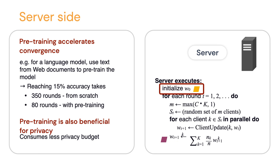With pre-training, to reach a reasonably good level of accuracy it took us 350 rounds from scratch, but only 80 rounds when the model had been pre-trained. For those familiar with differential privacy, pre-training is also beneficial for privacy because it allows us to consume less of the privacy budget.